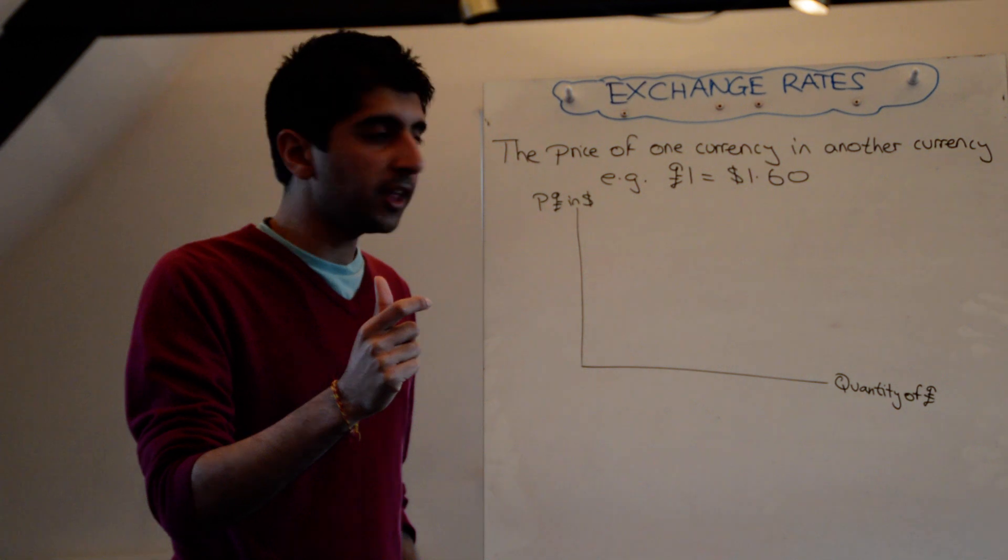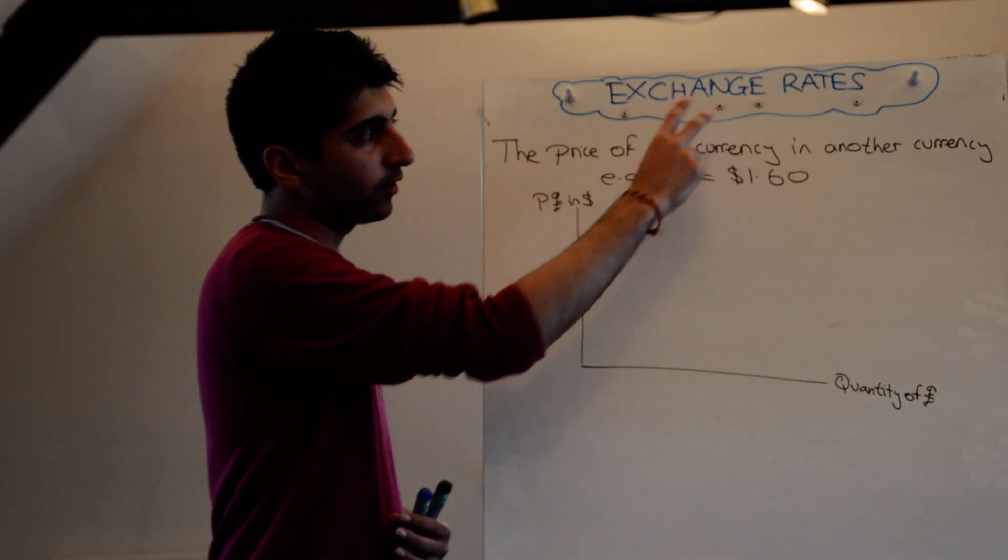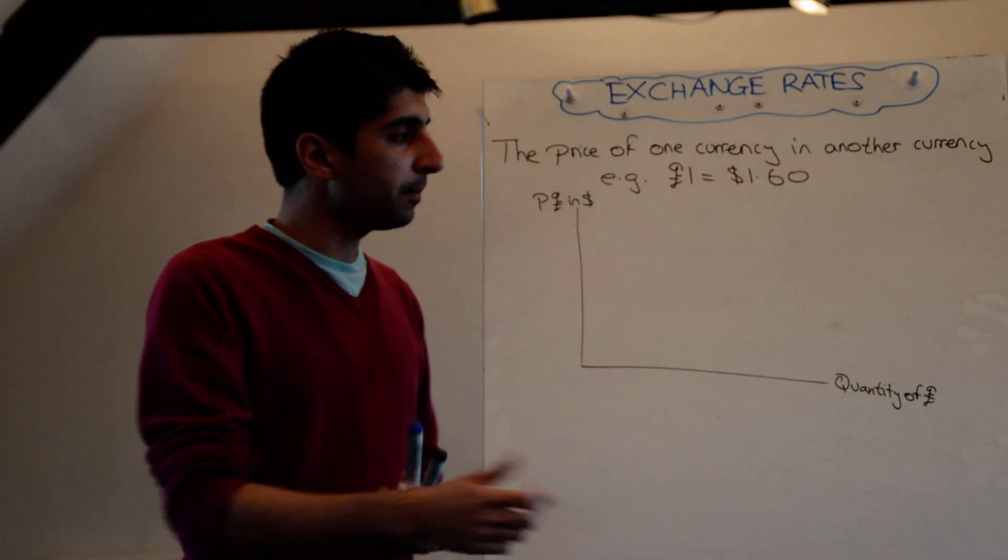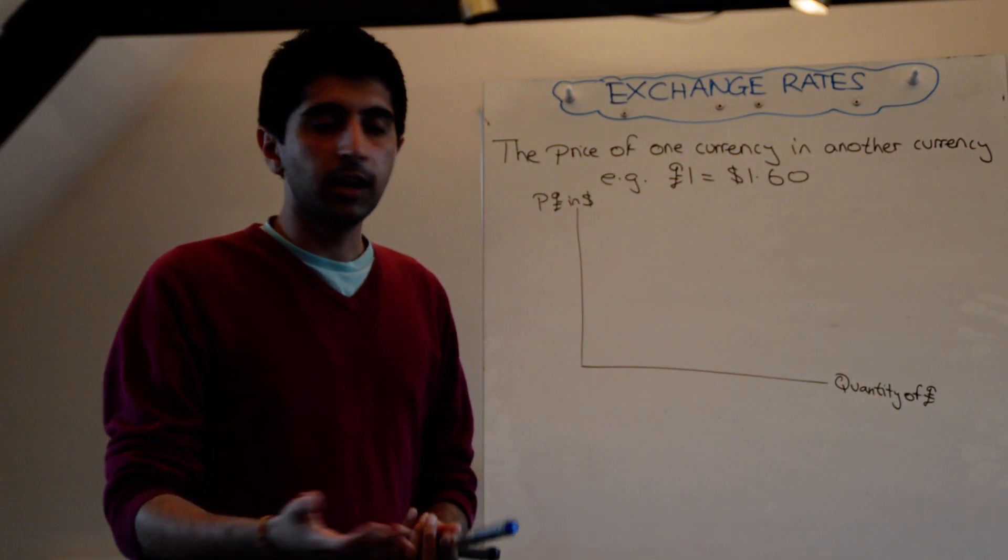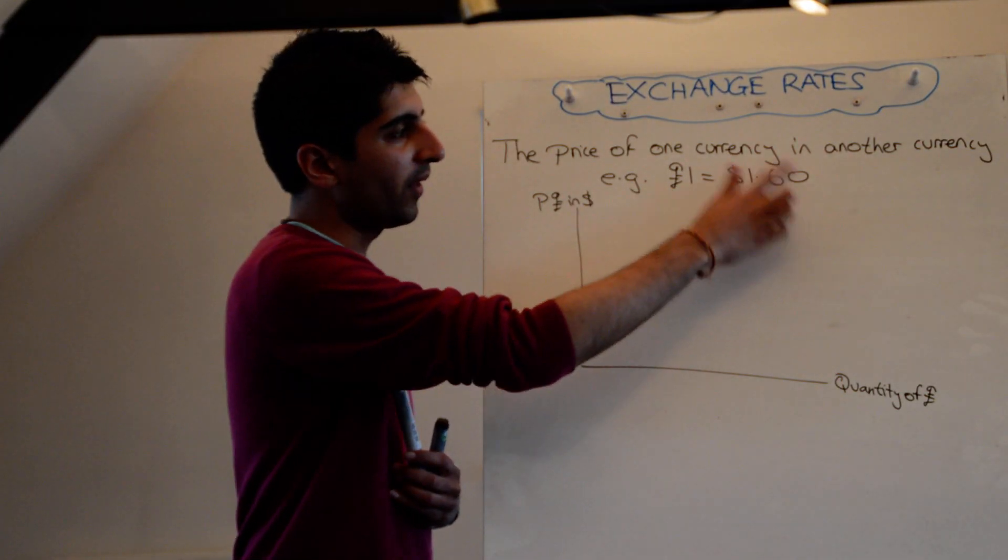And because we're talking about the price of something, when we're trying to understand where that price comes from, where an exchange rate is determined, we simply go to an economic market. Demand and supply, the forces of demand and supply tell us where this price comes from.